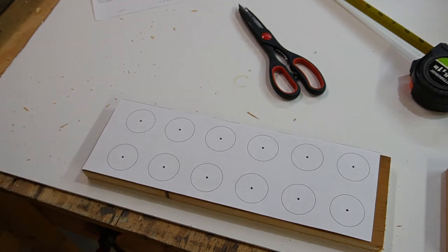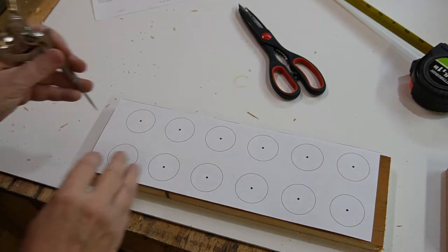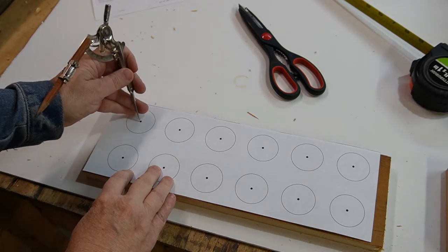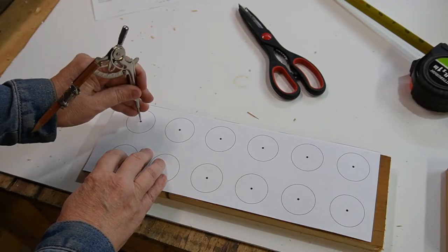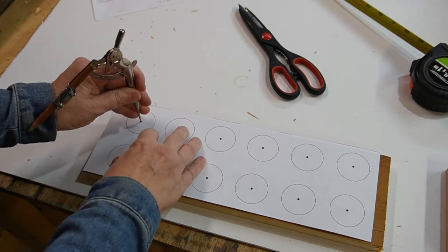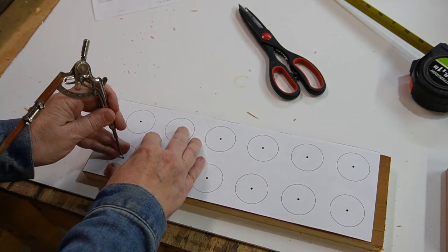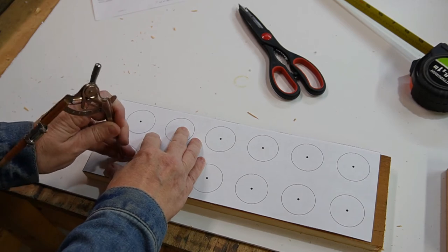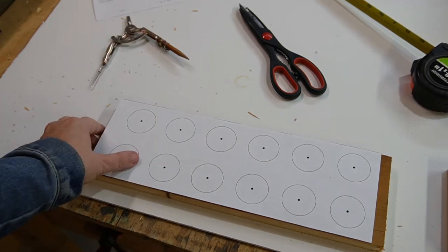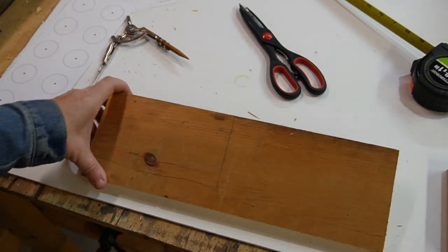And then what I will do next is I'm just going to go through with this compass tip, just put a notch in each of the holes. Now I have all of my notches on my board. I don't know if you can see that or not.